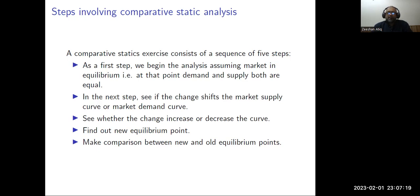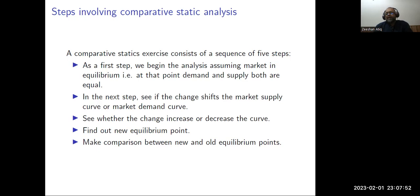The equilibrium price and equilibrium quantity are prevailing in the market. In the next step, we see if there is a shift in the market supply or market demand curve, and whether this change comes in the form of an increase or decrease. When these things change, we find the new equilibrium point. In comparative static analysis, you compare the old equilibrium point with the new one. These comparisons tell you whether the market achieves the new equilibrium at higher price and higher quantity, lower price and lower quantity, higher price and lower quantity, or lower price and higher quantity.